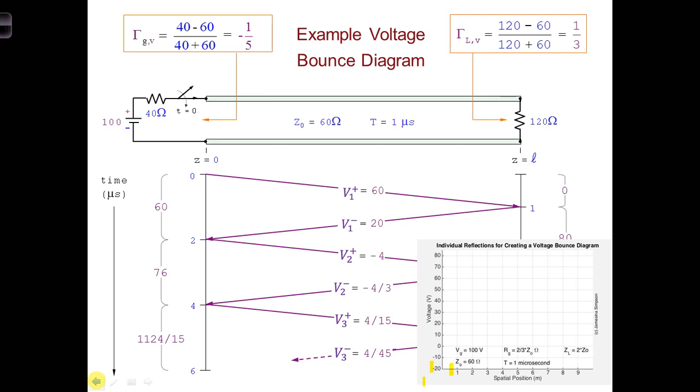Write down in your in-class project notebook that we can use bounce diagrams to help us keep track of individual reflections along a transmission line. This is particularly useful for transmission lines with branches.